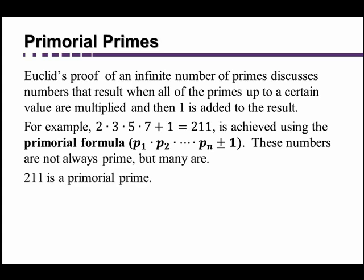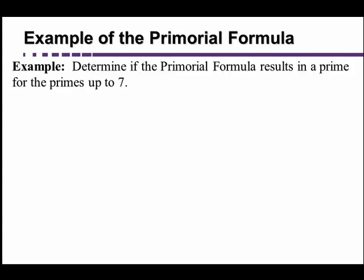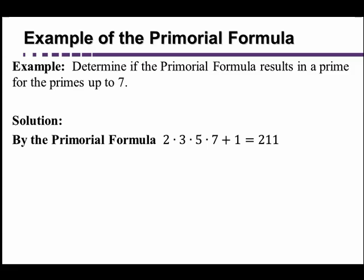211 is an example of a primordial prime, meaning that it's a prime number that results from using the primordial formula. So if you were asked if the primordial formula results in a prime number for the primes up to 7, they're asking you about that number, 211.